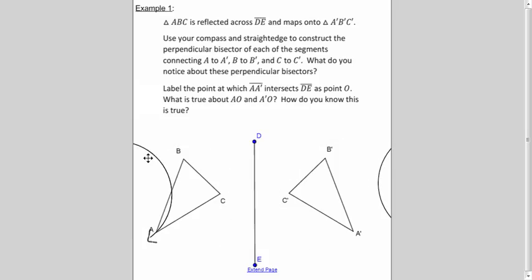Let's look at the questions now. We want to look at the perpendicular bisectors of A, A prime, B, B prime, and C, C prime. We can figure out what's going on with those. And then we want to talk about what happens with the point where segment A, A prime touches segment D, E. Just think about that for a moment.